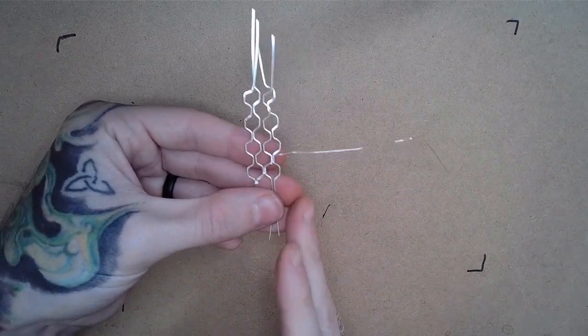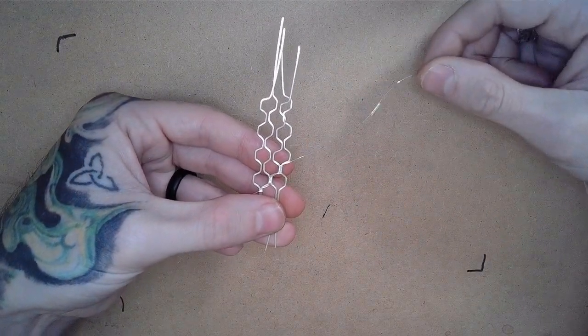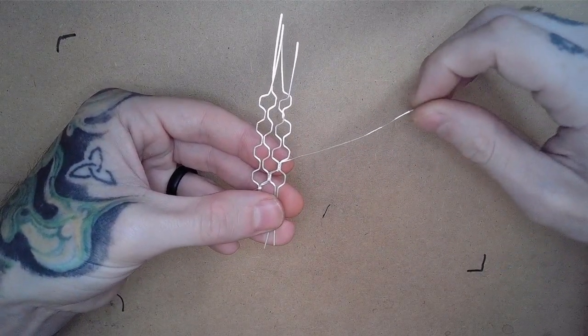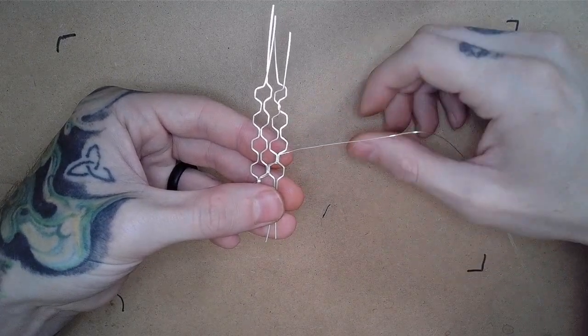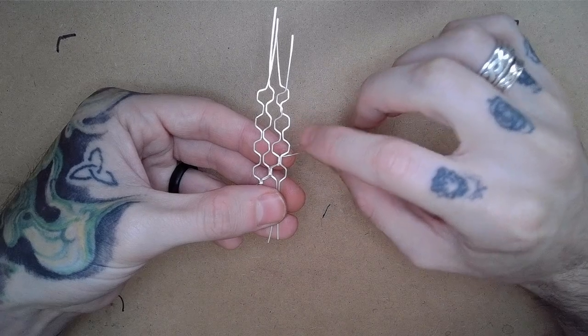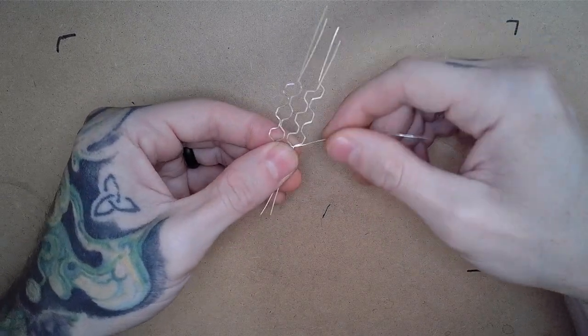If I was going to make my pattern wider from here, I would continue the same process that we've used thus far to connect our next square wire in the pattern to our next join. Since this is the end of where my pattern will be, I'm just going to go ahead and wrap it around eight times.